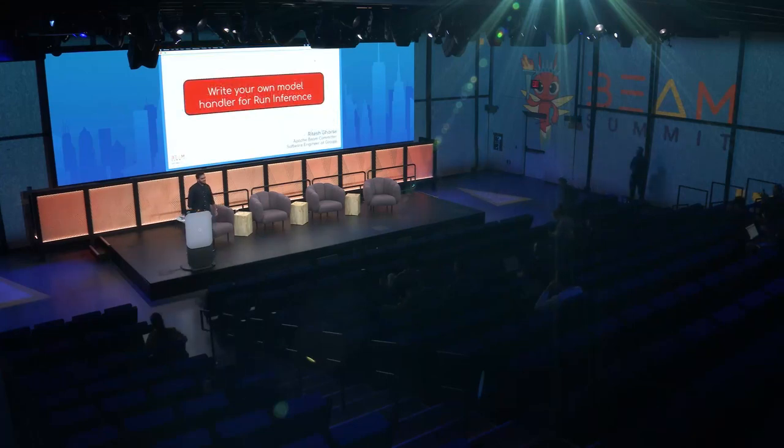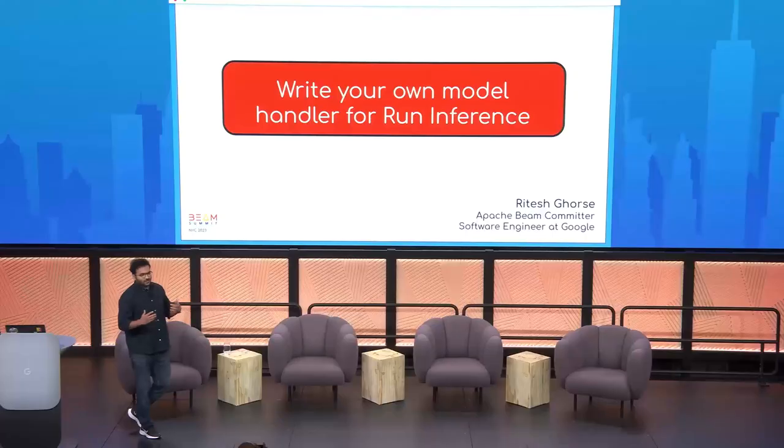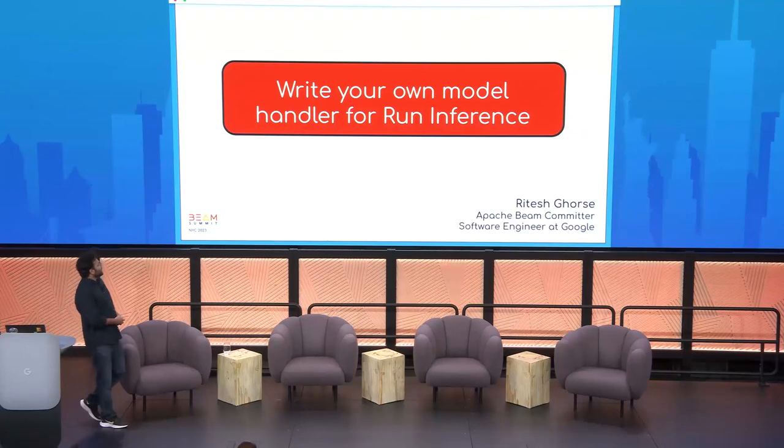Welcome back everyone. You might have heard the word RunInference a lot and how you can do RunInference in just one line. But you might have noticed that the RunInference transform accepts a model handler parameter — and that's what we're going to learn today: how to write a model handler. In the Apache Beam repo we have a couple of pre-built model handlers for different frameworks, but you might need a different framework or different input types, so you might want to write your own custom one. Let's get started.